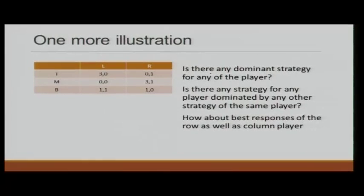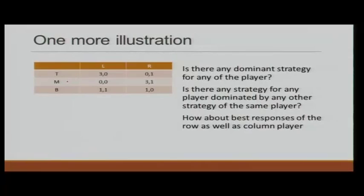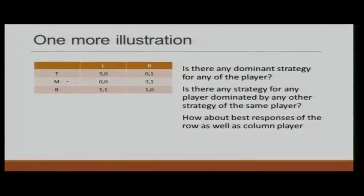Here is one more illustration. In this game, is there any dominant strategy for any player? For player 1, T cannot be dominant because when player 2 plays L, T is better than M, but when player 2 plays R, M is better than T. Comparing T, M, and B, there is no dominant strategy for player 1. Similarly, there is no dominant strategy for player 2.